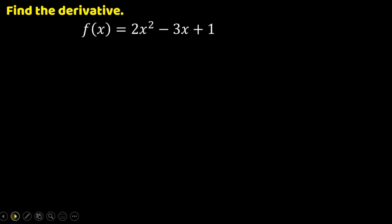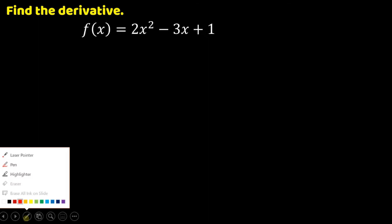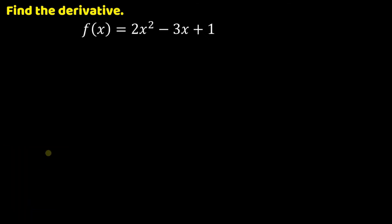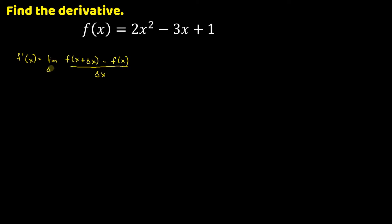So we have the first one: find the derivative of f of x equals 2x squared minus 3x plus 1. So as you can see, we have a quadratic function. So how are we going to find its derivative? As you can see in the previous slide, we have the definition of derivative as f prime of x is equal to the limit of f of x plus delta x minus f of x over delta x, as delta x approaches 0.